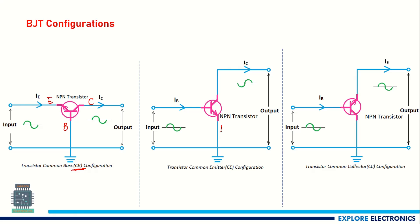Similarly, in the common emitter configuration, the emitter is common between the input and output sides, where the base acts as the input terminal and the collector acts as the output terminal. We also have the common collector configuration, where the collector is the common terminal, the base is the input terminal, and the output is measured from the emitter. These three configurations each have advantages and disadvantages.